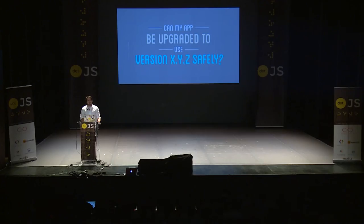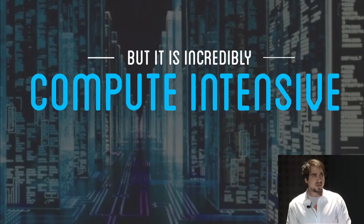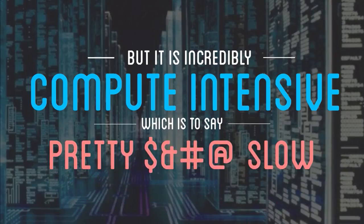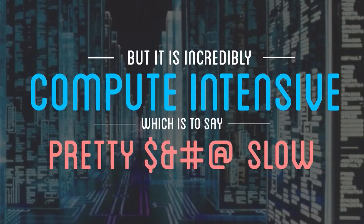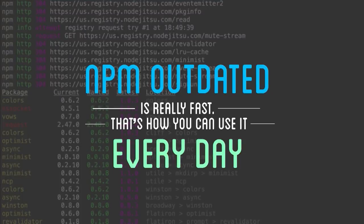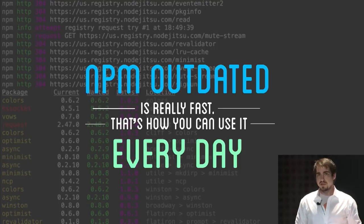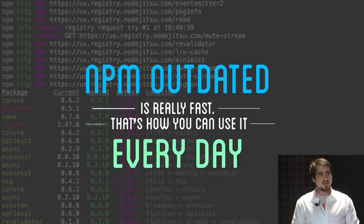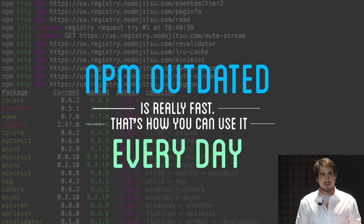Another classic question is: can my module be updated to this version safely — am I going to have some sort of breaking change? The problem with these types of questions is that they are incredibly compute intensive, which is to say extremely slow. In the particular example I gave before, running a standard analysis on a module like Winston, which happens to be a logging library I wrote, took about an hour. And that is not acceptable for us as developers because NPM outdated is really, really fast, which is why you can use it every day. Fast things get into your developer workflow.